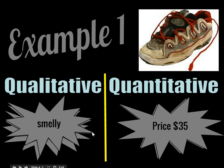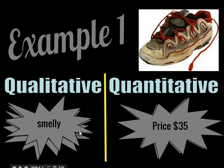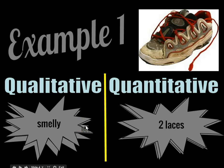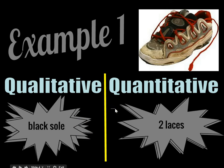A qualitative description would be 'smelly.' Another quantitative measurement would be that it has two laces. Another qualitative would be that it has a black sole. I hope you're getting the idea. Let's do another example.